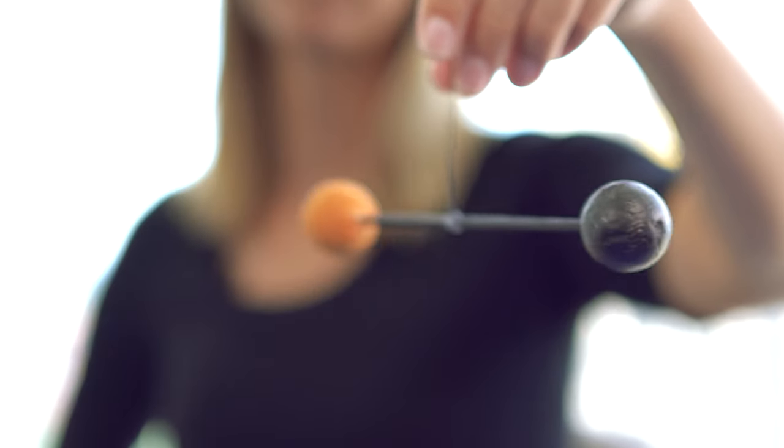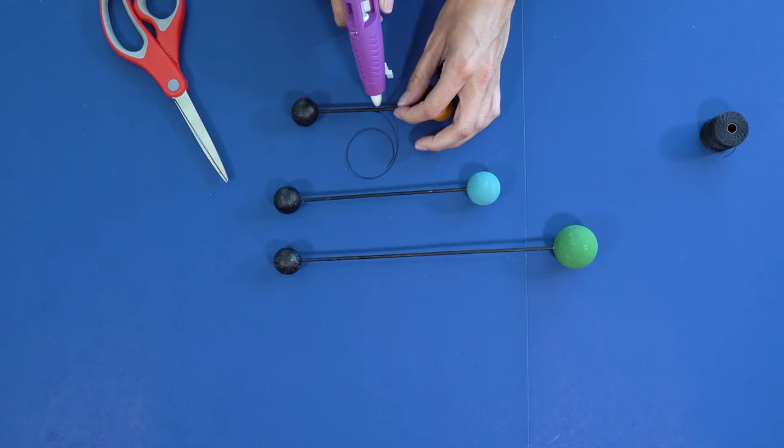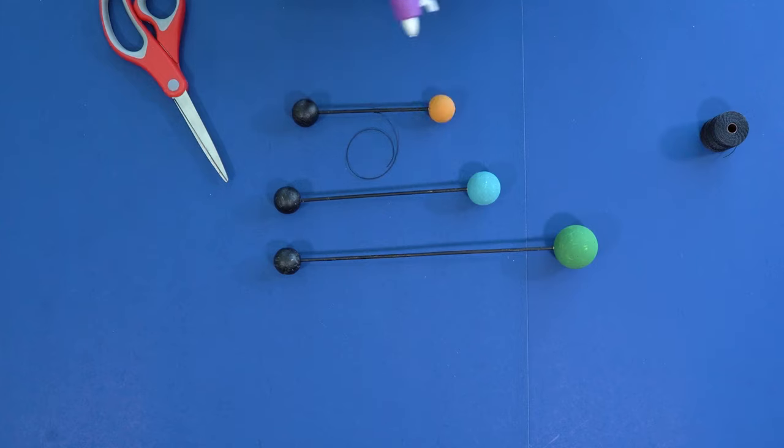Once you get it perfectly balanced, lay it down carefully and then you're going to put a small bead of hot glue right on the string, and that way it'll hold it to the stick in that perfect spot.